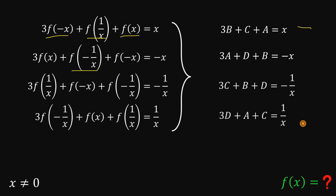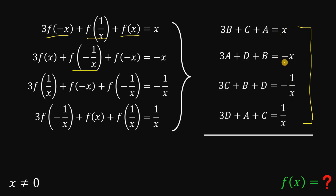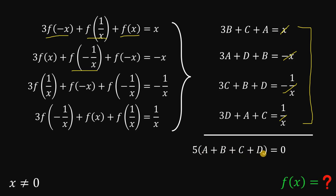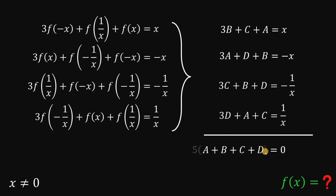Now, if we add all four equations together, the right-hand side is 0 because positive x and negative x cancel, and negative 1 over x plus 1 over x also cancels. On the left-hand side we get 5a + 5b + 5c + 5d. Dividing both sides by 5 gives us a + b + c + d = 0.